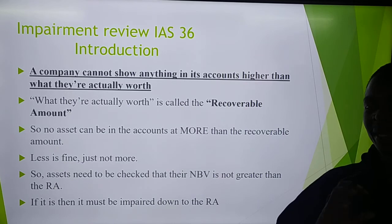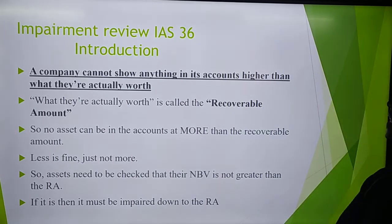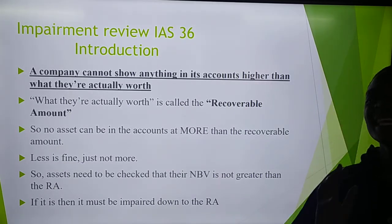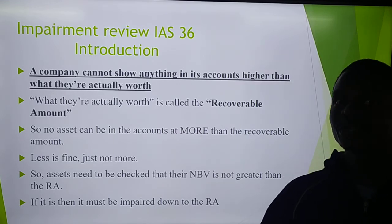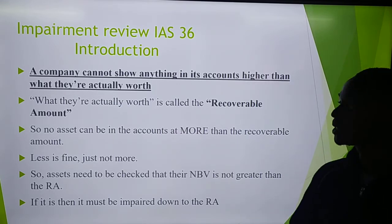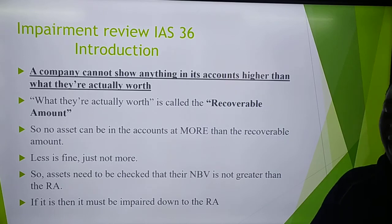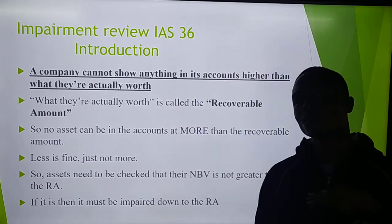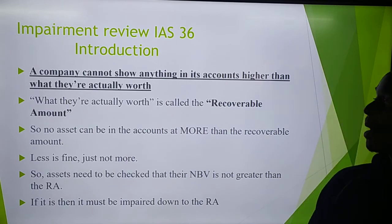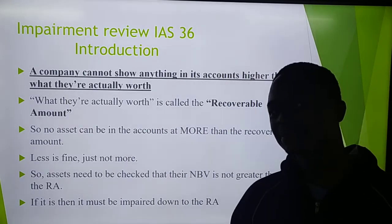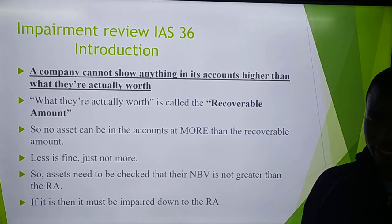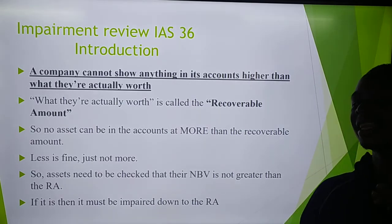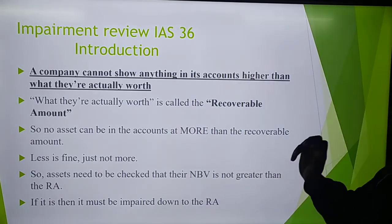An entity cannot show anything in its account higher than what they are actually worth. We should not overstate — remember the prudence concept. What the assets in the business are actually worth is called the recoverable amount. As a business records transactions, no asset can be in the account at more than its recoverable amount.